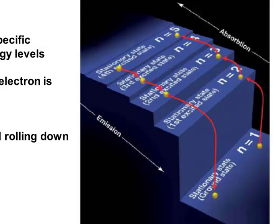The electron is not going to stop halfway between two energy levels. Which means that the energy of these electrons is going to be quantized based upon where these energy levels fall within the atom.